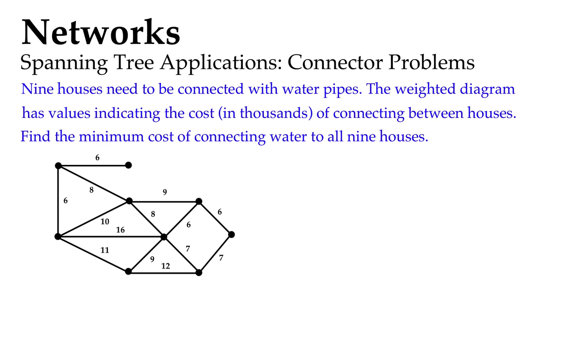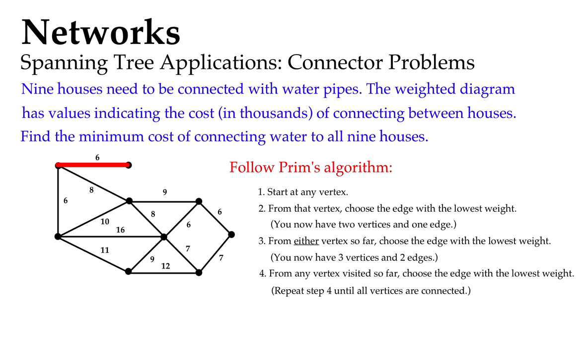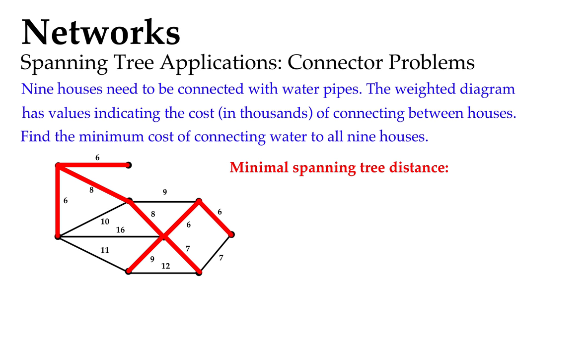And we applied the minimal spanning tree to an example where we had houses and water pipes to connect. We used Prim's algorithm to get a diagram to make sure we didn't put any extra water pipes in the ground and cost ourselves some money. So that's a good application there for connector problems, and we can figure out just how much money it will cost to connect.